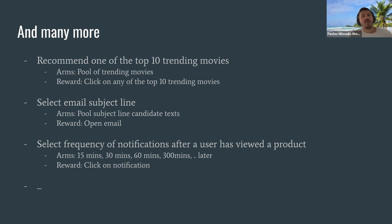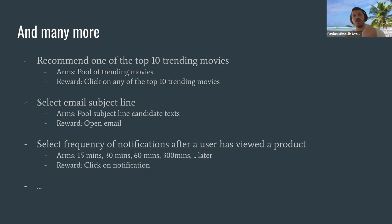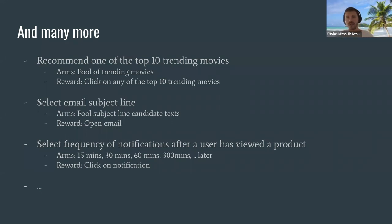Another application is selecting the frequency of notifications after a user has viewed a product. Say I was on the Amazon app and checked a product but didn't purchase it. A marketer wants to send a reminder notification. The question is: should it be sent after 15 minutes, 30 minutes, 60 minutes, or 300 minutes? These different frequencies are the arms, and the reward is a click on the notification.